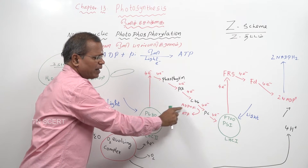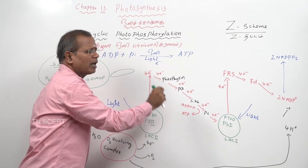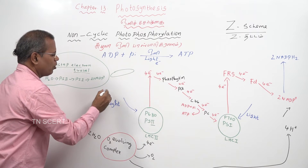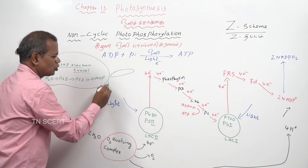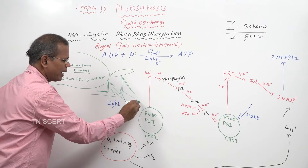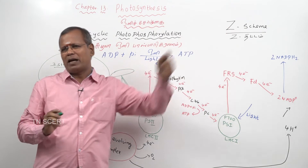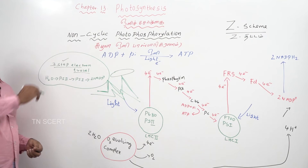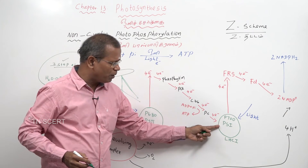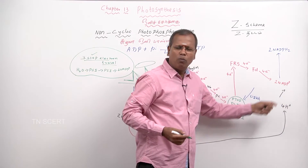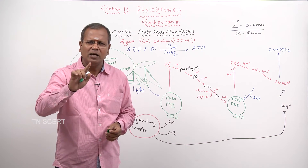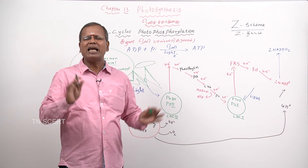During the electron travel, ATP is formed. So it is said to be non-cyclic photophosphorylation. The path goes: water to PS2 to PS1 to NADP+, like a zigzag manner. This is called the Z-scheme. The electron travel is composed of three steps: number one, water to PS2; number two, PS2 to PS1; number three, PS1 to NADP+. At each stage ATP is formed.